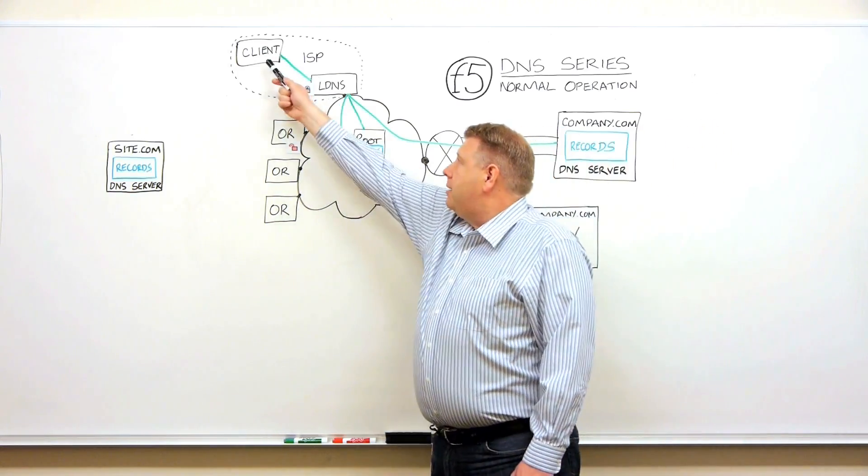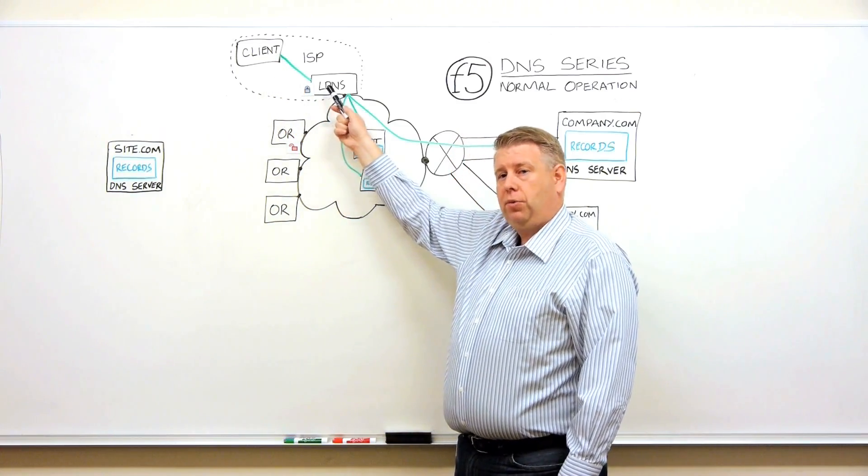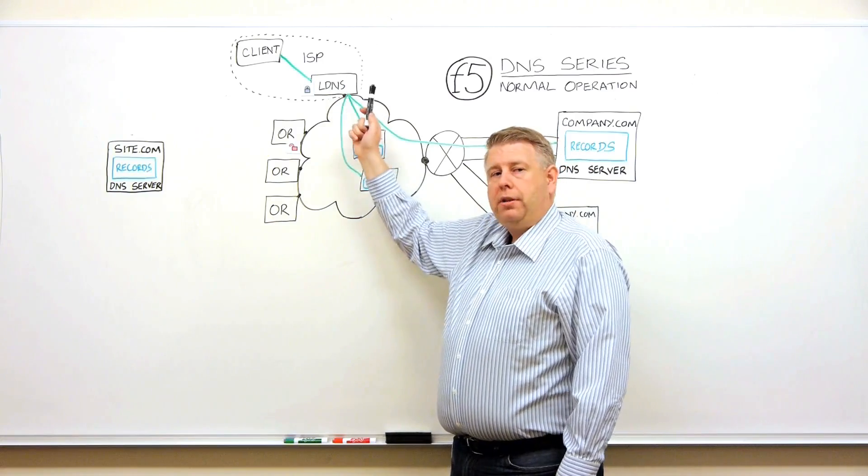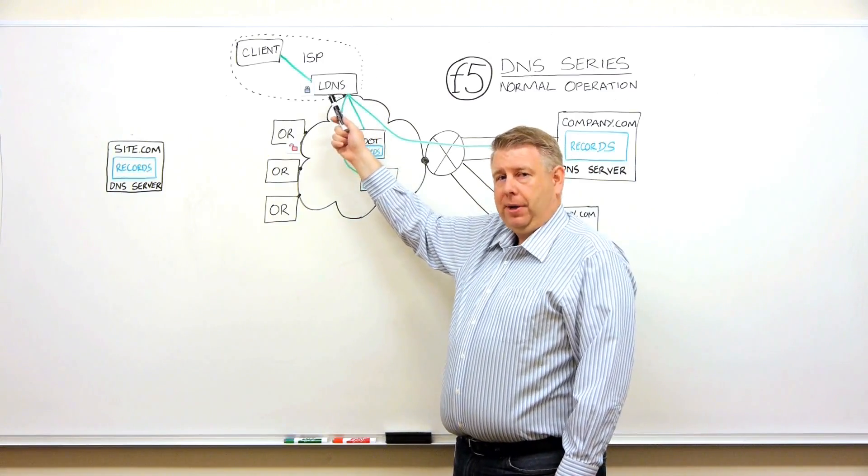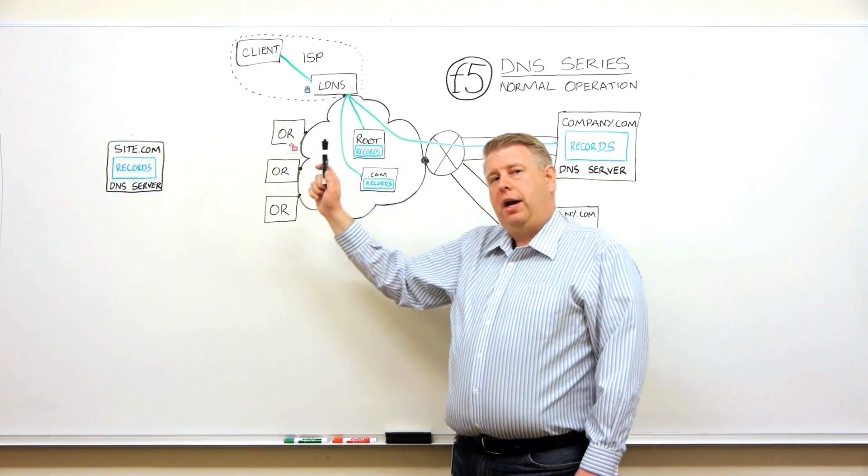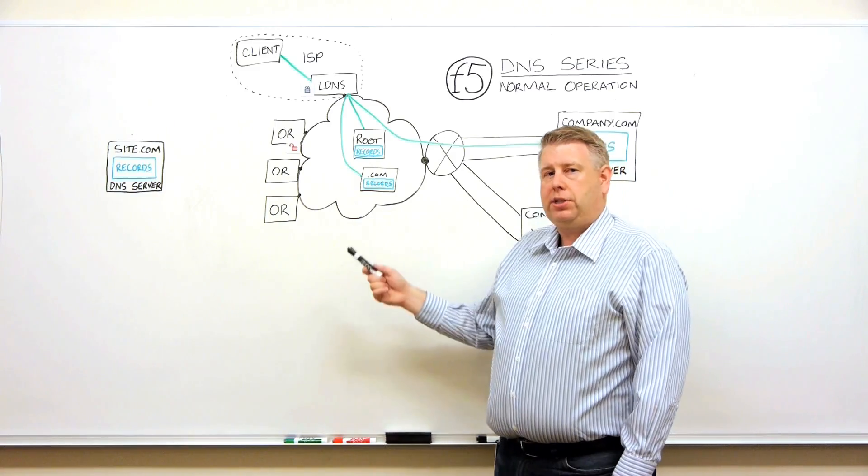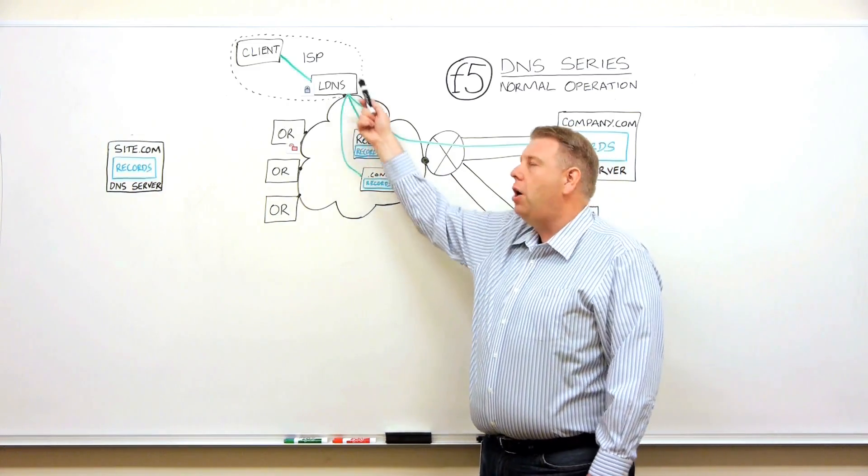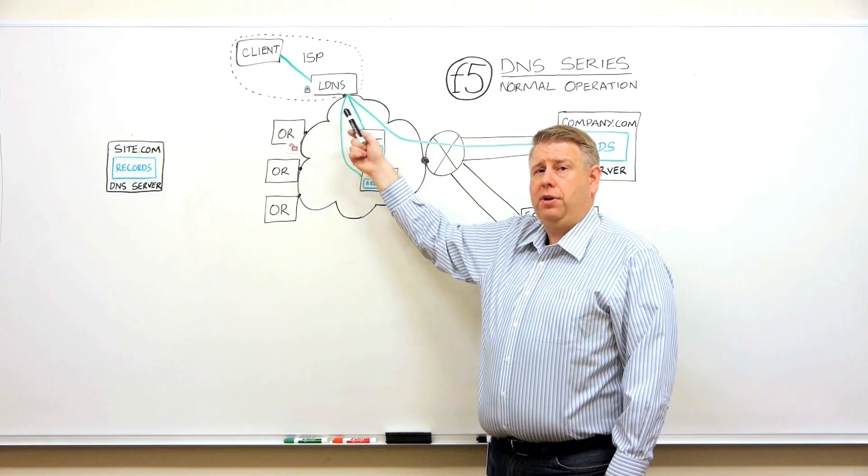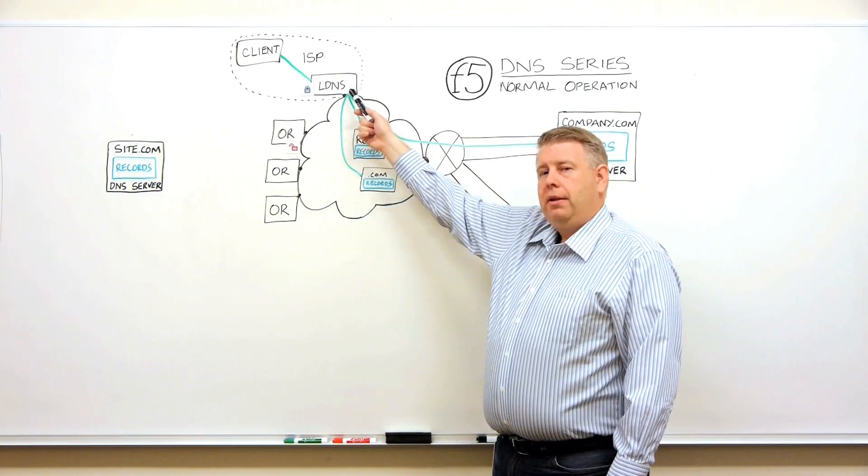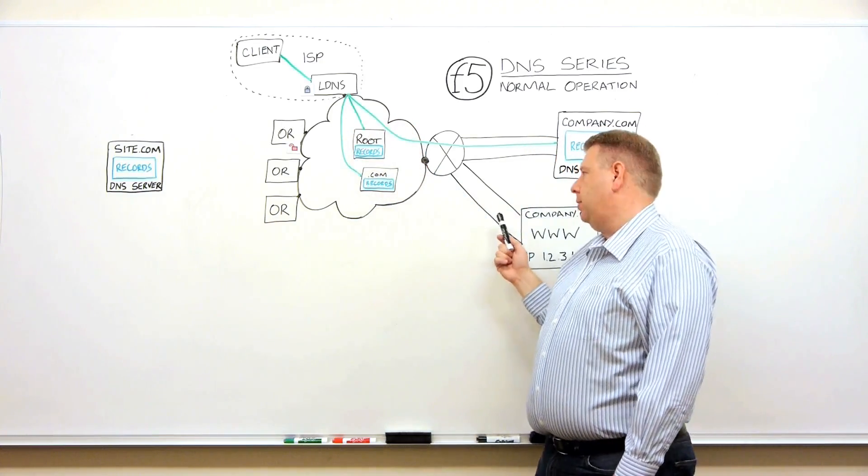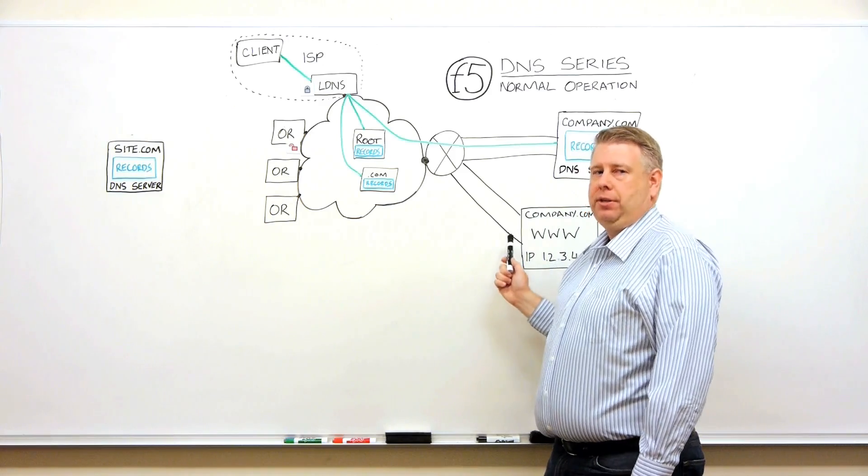So the client is going to ask its local resolver, LDNS, local DNS server, for the address for www.company.com. Now the local DNS server is then going to have to resolve that name. We call it a resolver because it doesn't automatically know the phone number or the IP address for all of those different names. So first it has to figure out the address to get to and which server to ask. So sort of like finding out what page in the phone book.